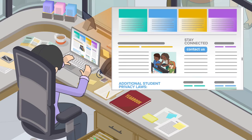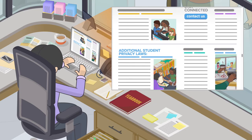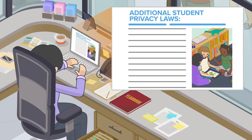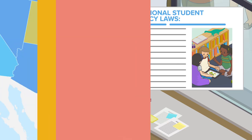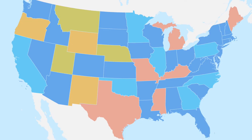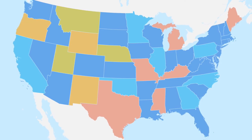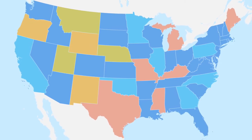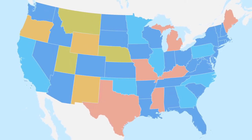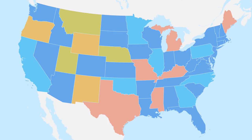In recent years, states have started to pass additional student privacy laws, which has increased the requirements you'll need to follow. Reach out to your state education agency to find out more about your obligations and request resources to help you comply with the relevant laws in your state.